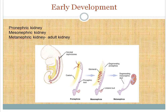The early development of the human kidney can be divided into three sets of excretory organs: the pronephric kidney, the mesonephric kidney, and the metanephric kidney, which is the adult kidney. The pronephric kidney is the earliest of all.